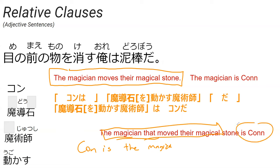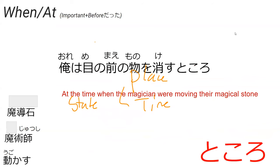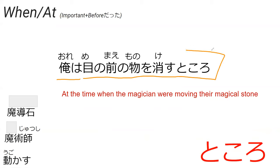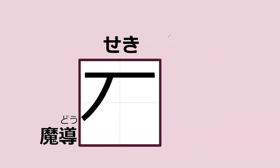That's how relative clauses work — it just means this sentence is describing a noun. Also, ところ is a word that refers to place and time — sometimes called 'state' — and you can use it to describe when something occurred. We'll be going back to that later.